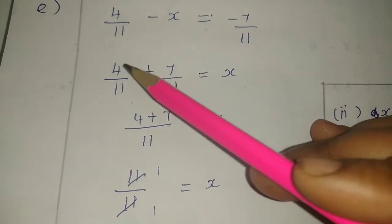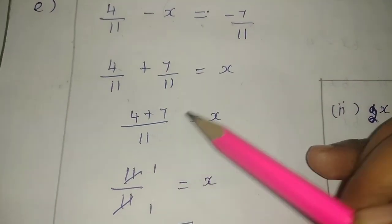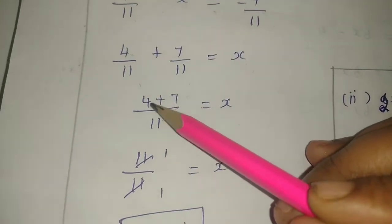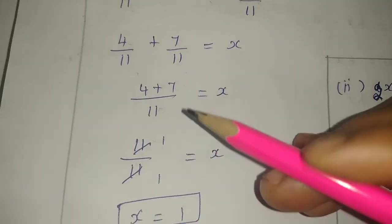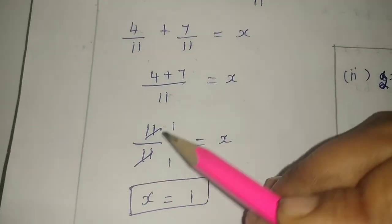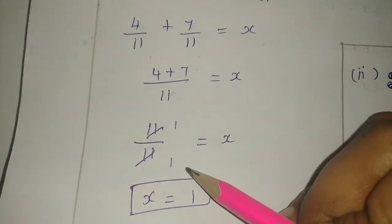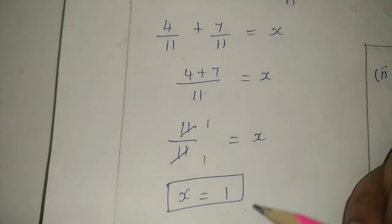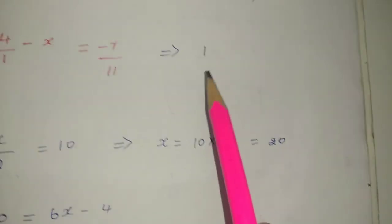One denominator: 7 plus 4 equals x. 7 plus 4 is 11. 11 by 11 equals x. 11 table is one time, so 1 equals x. The value of x is 1.